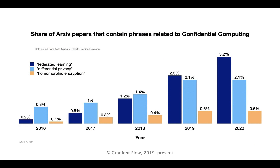From 2016 to 2020, on the popular preprint sharing site arXiv, the number of papers containing the phrases FL, DP, and HE grew significantly.